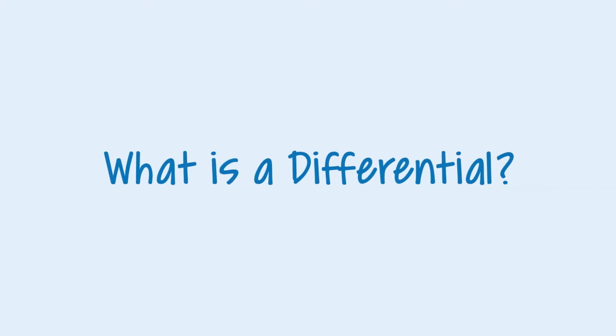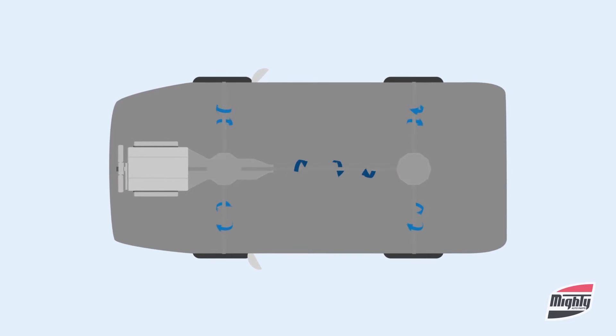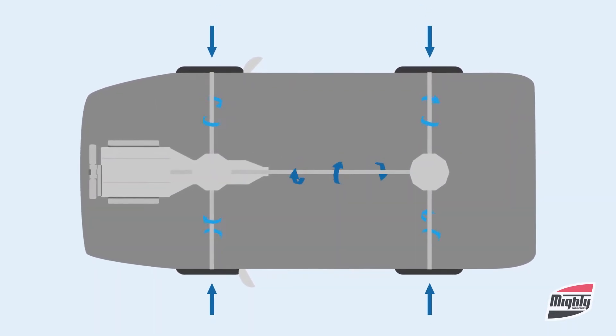So what is a differential? Well, put simply, it's a set of gears where rotational power from the engine is slowed down and redirected to spin the wheels of your vehicle.